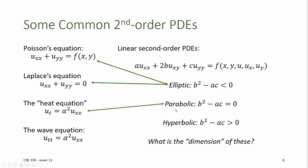The heat equation is an example of a parabolic equation. In this case, both 2b and c are equal to 0. So, since 2b is equal to 0 and c is equal to 0, b² - ac is also equal to 0.